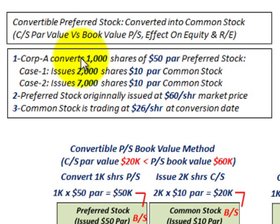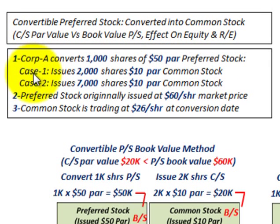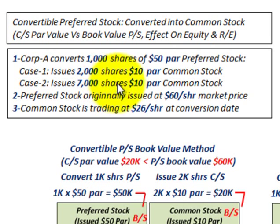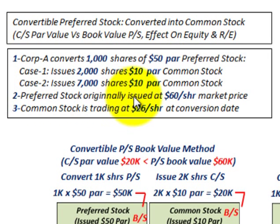For our example, Corporation A converts 1,000 shares of its $50 par preferred stock into common stock. We're going to be looking at two cases. The first case is where they're going to issue 2,000 shares of $10 par common stock for these 1,000 shares of preferred stock. And then case two, where they're going to issue 7,000 shares of $10 par common stock for those 1,000 shares of preferred stock. The preferred stock was originally issued at $60 per share.